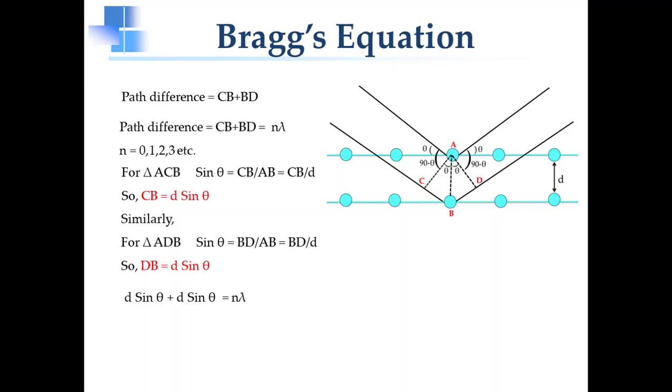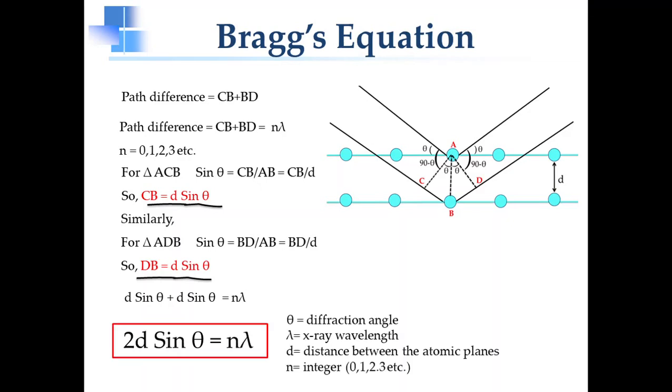Now replace CB and DB by D sin theta in path difference equation. So finally we get a new equation that is 2D sin theta is equal to n lambda. This equation is known as Bragg's equation.